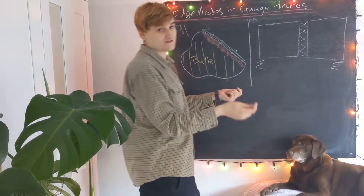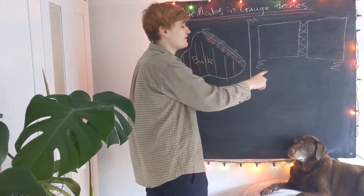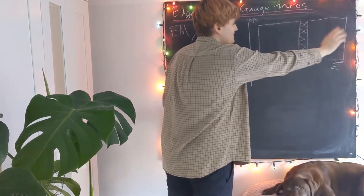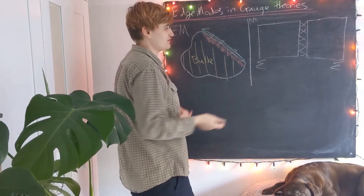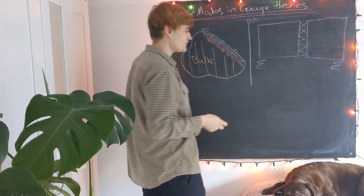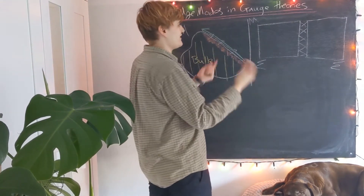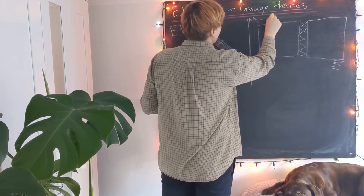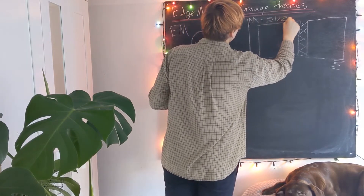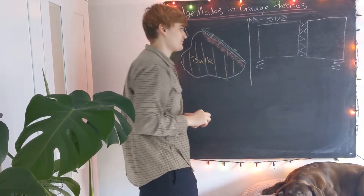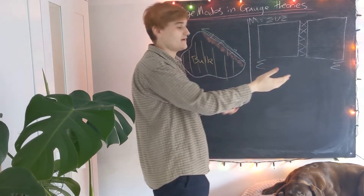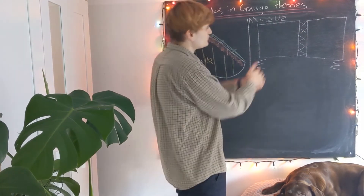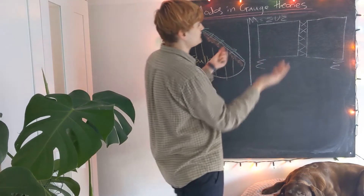I've introduced what's known as a fiducial boundary — this boundary will disappear when I glue these two regions back together. It could be the case that there is no other half to this space-time, making it a physical boundary, but I'm not going to distinguish between those two cases for now. If we have a gauge theory defined on this whole space-time — where the whole space-time is the union of these two regions — we're going to have gauge fields that live on the space-time. So what does introducing this boundary do to our gauge theory?